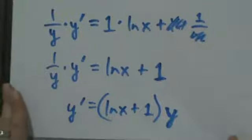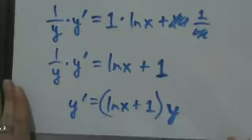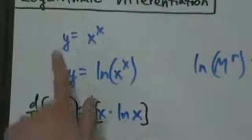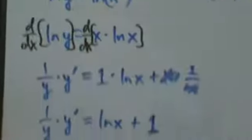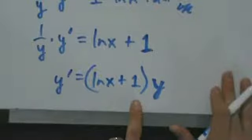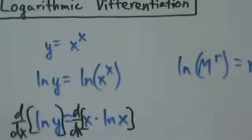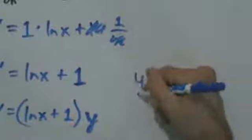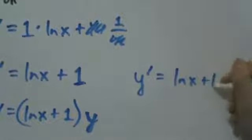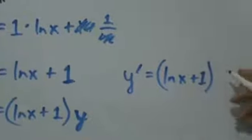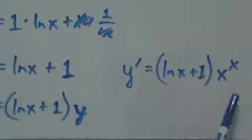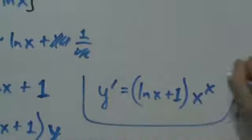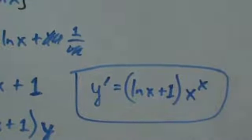Why aren't we done yet? Because we're not doing true implicit differentiation — we know what y is in terms of x. So we go back to the beginning: y is x to the x. We substitute that in, giving us: y prime equals (natural log of x plus 1) times x to the x. Our final answer should have only x's in it — no y — because we know what y is in terms of x.